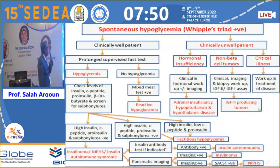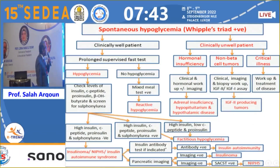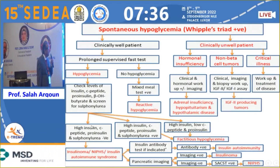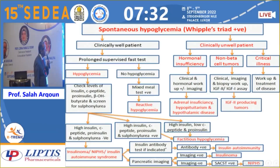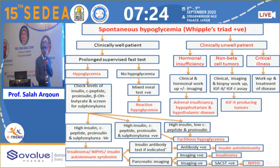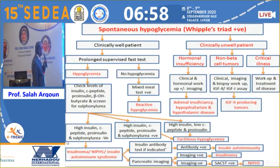Our approach to spontaneous hypoglycemia begins by confirming it is truly hypoglycemia using Whipple's triad. We then assess whether the patient appears clinically ill. If they are ill, the cause is usually apparent — such as hormone insufficiency like adrenal insufficiency or hypothyroidism, non-beta cell tumors, or critical illness such as hepatic failure. If hypoglycemia occurs during a prolonged supervised fast test, we check the levels of insulin, C-peptide, proinsulin, beta-hydroxybutyrate, and screen for sulfonylureas.